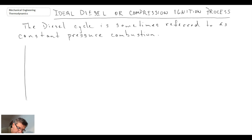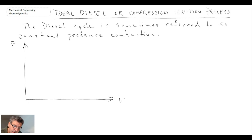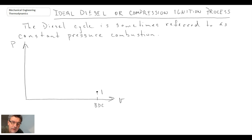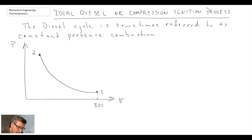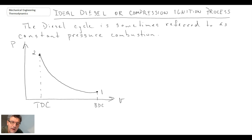Let's take a look at our PV diagram. The diesel is similar to the Otto cycle with one exception: the way we do the heat addition process, or where combustion actually occurs. We start at bottom dead center at state 1. With the diesel, we have a much larger compression ratio than with the Otto cycle. Consequently, only air is being compressed — no fuel — going to a higher temperature and pressure at top dead center. That is when you inject the fuel, and given the very high temperature, combustion then takes place.